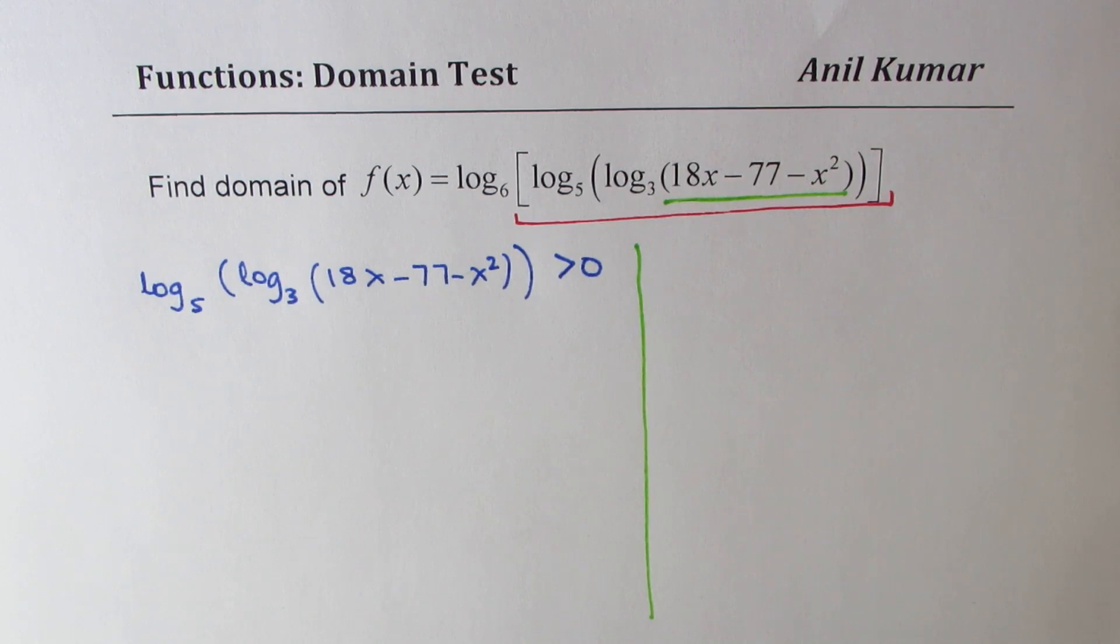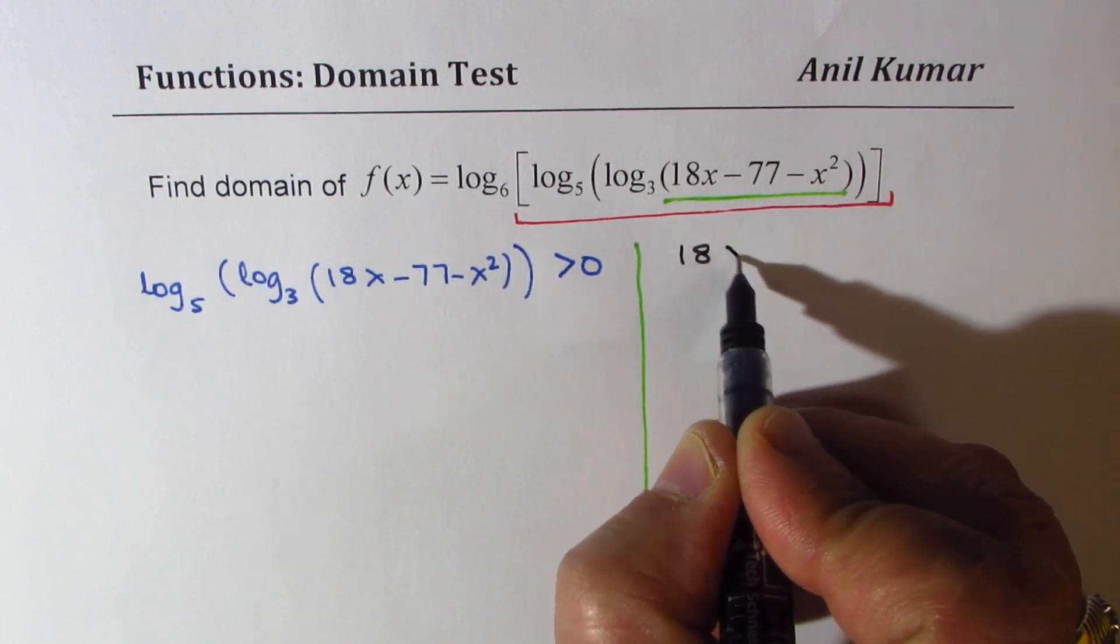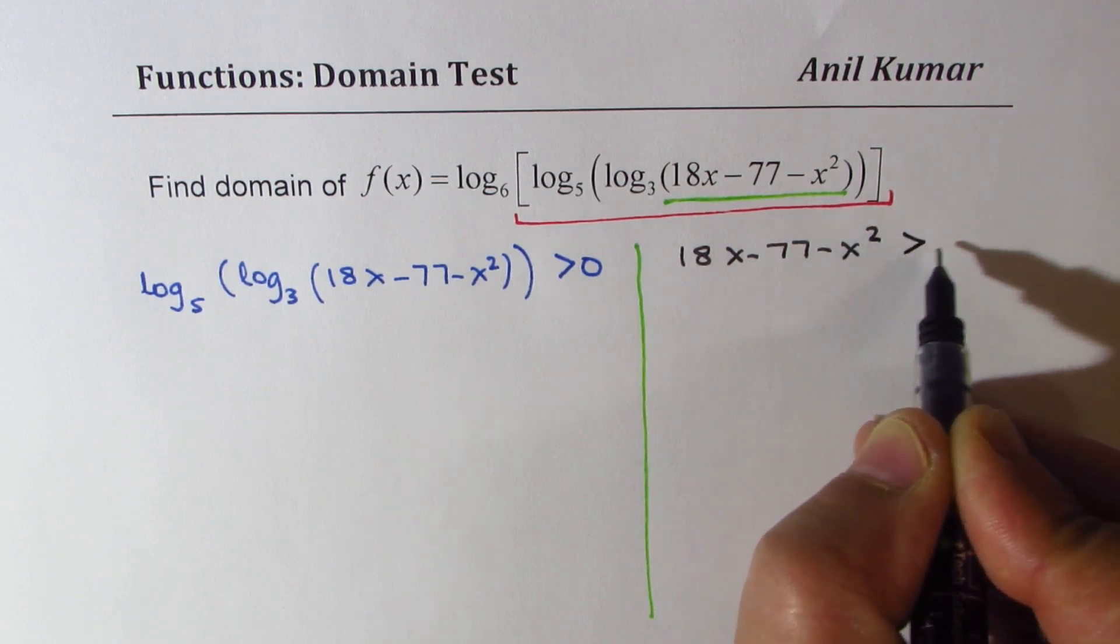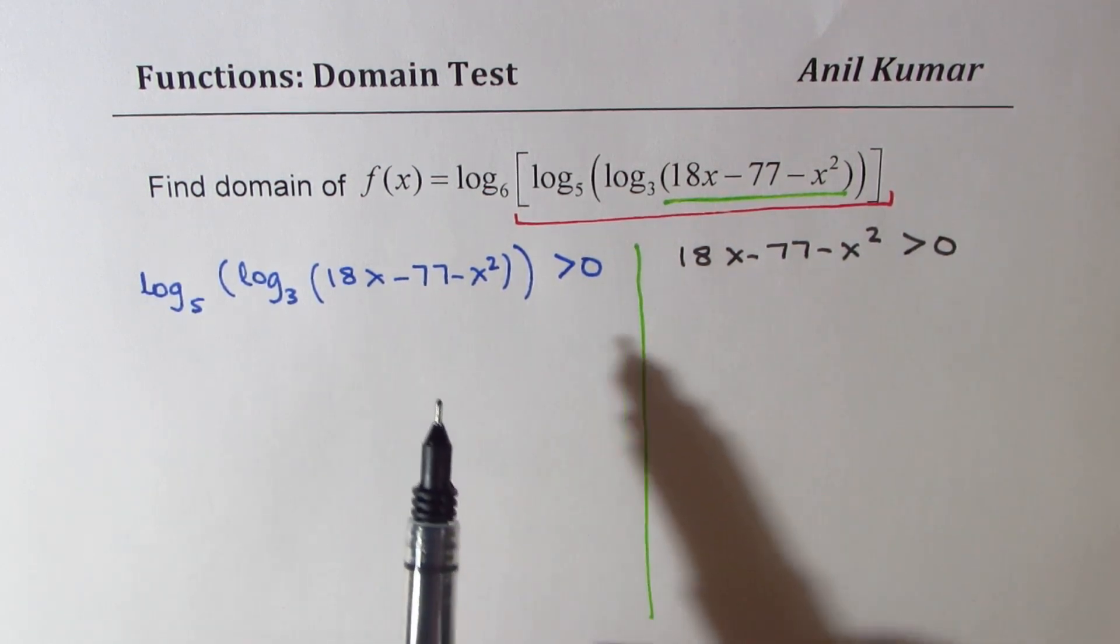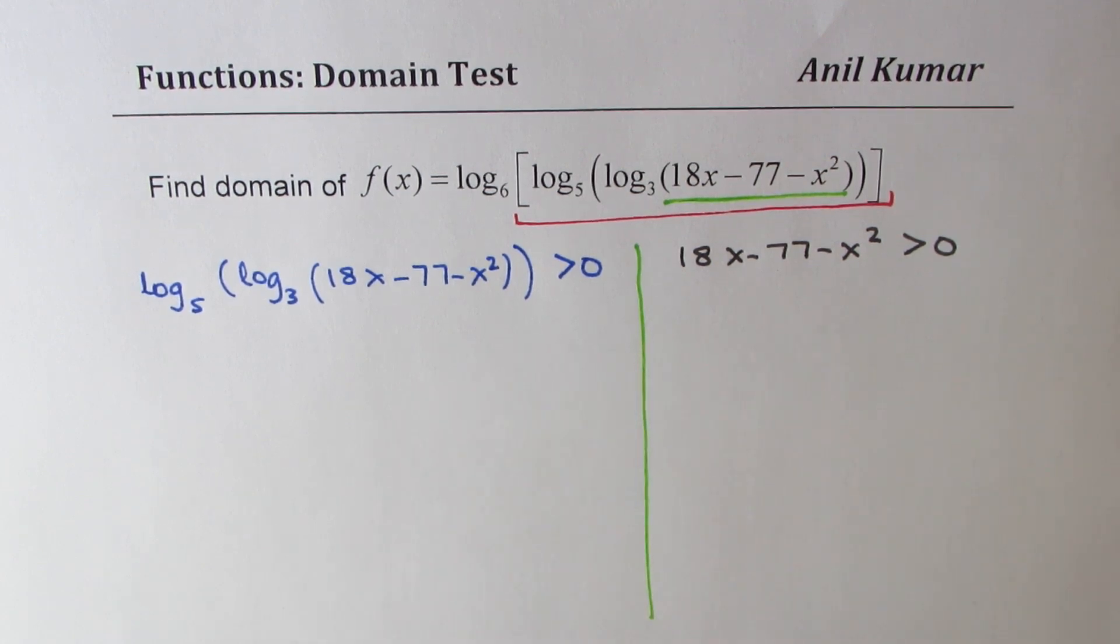So we have two conditions to solve in this particular example. So the second condition here is 18x minus 77 minus x squared should be greater than 0. Now intersection or something common between the two will be your solution.